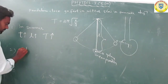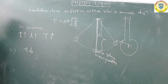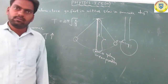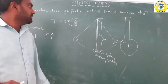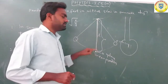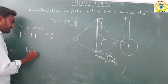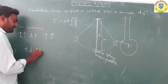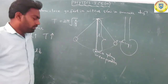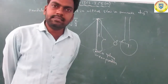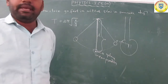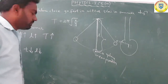Compared to summer, in the case of winter season, the temperature is decreased. When temperature is decreased, the length of the pendulum is also decreased. And when L is decreased, the time period T is also decreased.